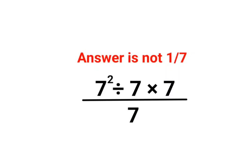Welcome everyone. Today we are going to understand how to solve this kind of question: 7 squared divided by 7, multiplied by 7, and then the whole thing divided by 7. A lot of people think that this 7 multiplied by 7 is so easy, right?